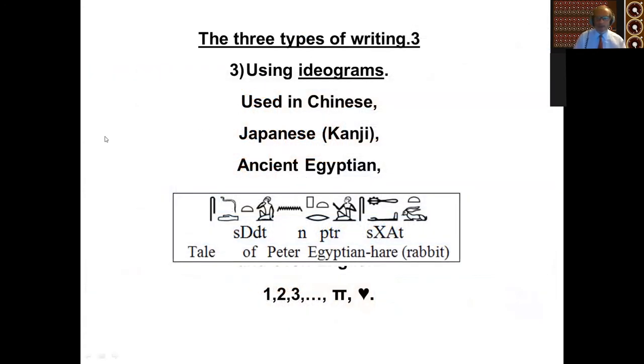The third type of writing is ideograms which are used in Chinese and in Japanese and in ancient Egyptian. And there's this fine book you can buy, the tale of Peter Rabbit, which has been translated into Egyptian hieroglyphics. And the word tale, for example, is represented by this character here. And you can see it's somebody sitting and it looks like he might be sort of speaking. This Peter tells you it's a name. So here's a person sitting who's named. And last of all, here's a character that looks a bit like a rabbit, but is actually a hare because they didn't have rabbits in Egypt.